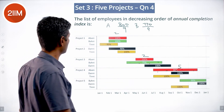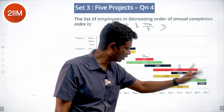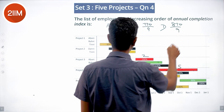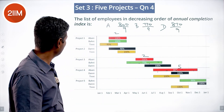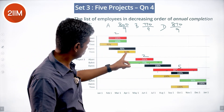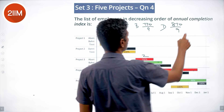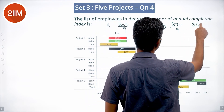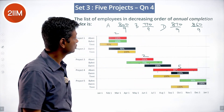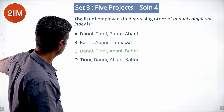For Dhani, calculating the weighted completion index gives 860/9. Tinni's completion index comes to 870/9. So the decreasing order of annual completion index is: Dhani, Tinni, Abani, Bhani — D, T, A, B.